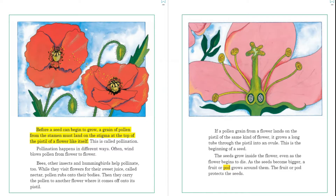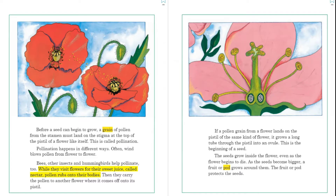Before a seed can begin to grow, a grain of pollen from the stamen must land on the stigma at the top of the pistil of a flower like itself. This is called pollination. Pollination happens in different ways. Often wind blows pollen from flower to flower. Bees, other insects, and hummingbirds help pollinate too, while they visit flowers for their sweet juice called nectar. Pollen rubs onto their bodies, then they carry the pollen to another flower.